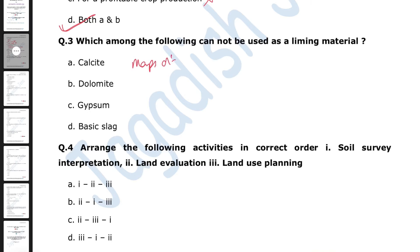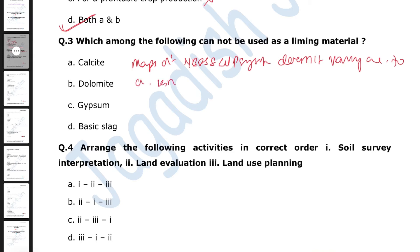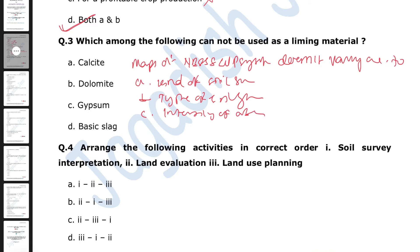Next question about maps of NBSS & LUP: the system does not vary according to which of the following? Options are: kind of soil survey, type of soil group, intensity of observation, or scale of base map. The right answer is type of soil group. Maps of NBSS & LUP do not vary according to type of soil group. They do vary according to kind of soil survey, intensity of observation, and scale of base map.